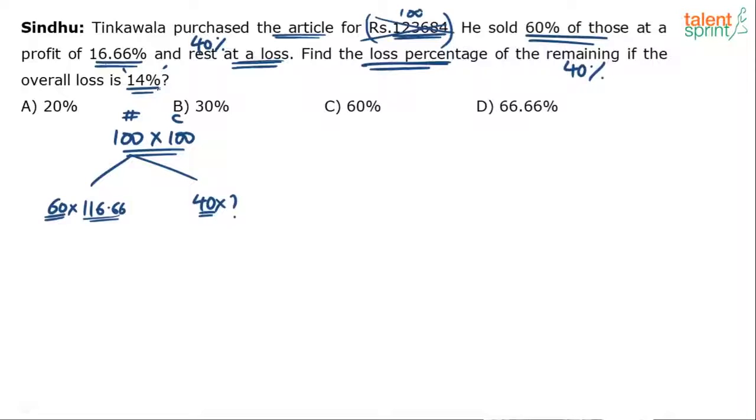Understand the overall loss is 14%. Meaning what? This is the selling price of 60 articles plus this will be the selling price of the remaining articles. This should be equal to the total selling price. He has sold 100 articles totally. At what price? He sold at a loss of 14%. So what he purchased at 100 rupees was sold overall at 86 rupees.